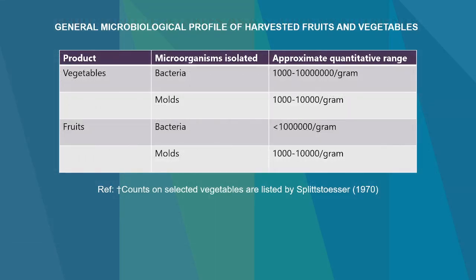Now, if you see the general microbial profile of harvested fruits and vegetables: for vegetables, the number of bacteria present is in the range of 10 to the power of 3 to 10 to the power of 7 per gram, and the number of molds present is 10 to the power of 3 to 10 to the power of 4 per gram. Coming to fruits, bacteria content in harvested fruits is 10 to the power of 7 per gram, and molds are again 10 to the power of 3 to 10 to the power of 4 per gram. This is the microbial profile naturally present on fruits and vegetables.